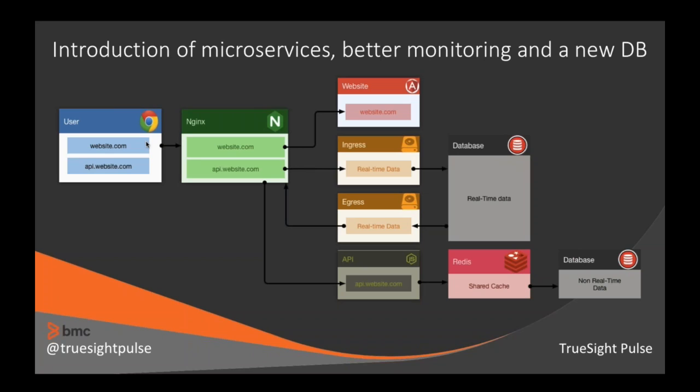Things are going well. We hit the front page of Hacker News, and that dreaded load spike comes — services go offline. We start losing data again, and because we're real-time, everyone can see us losing data in real-time. So we need to decouple the ingress from actually saving the data to protect ourselves both from a service going down and from the database backing up.